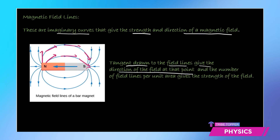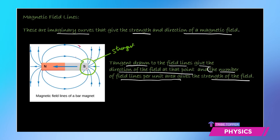The number of magnetic field lines per unit area gives the strength of the field. As you can see, near the pole you have crowded lines — meaning the field is strongest near the south pole as well as the north pole, because the number of magnetic field lines per unit area is bigger there. As we keep on moving away from these poles, the magnetic field lines move farther apart, and as they keep moving farther apart, the field strength goes on decreasing. So crowded lines indicate a strong magnetic field.